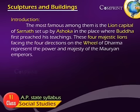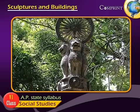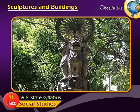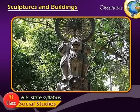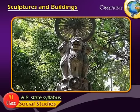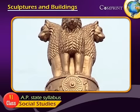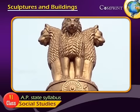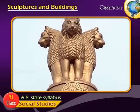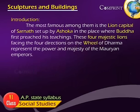The most famous among them is the Lion Capital of Sarnath, set up by Ashoka in the place where Buddha first preached his teachings. These four majestic lions facing the four directions on the Wheel of Dharma represent the power and majesty of the Mauryan emperors.